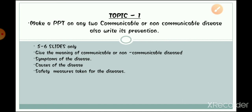If you are taking one communicable and one non-communicable disease, include the meaning of both. Explain each disease and include the symptoms of the disease, the causes, and at the end include what safety measures or prevention steps can be taken to stop that particular disease. You can also show food items that help prevent those diseases.